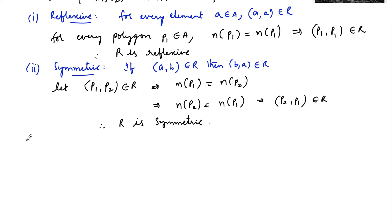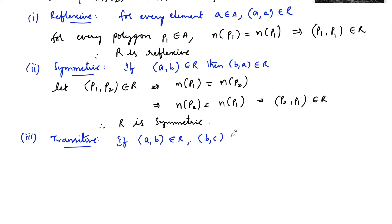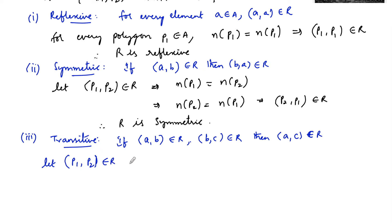Third, transitive. The condition for transitive is: if (a, b) belongs to R and (b, c) belongs to R, then (a, c) must belong to R. Let (p1, p2) belong to relation R and (p2, p3) belong to R.